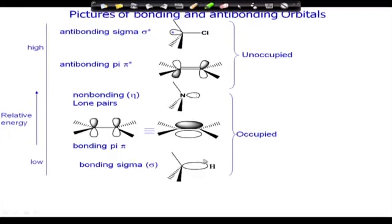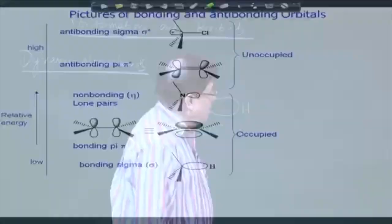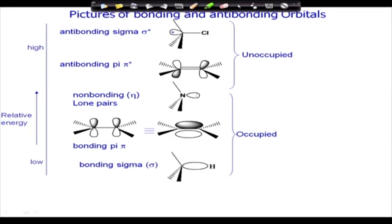If you have a sigma bond — a C–H bond — the hydrogen s-orbital and the carbon sp3 orbital interact. This is the sigma CH orbital. However, there is actually a tiny amount on the back side as well. Similarly, when two p-orbitals combine laterally, there are two scenarios: if they are in phase, there will be an electron cloud at the top and bottom — this is the bonding pi orbital.